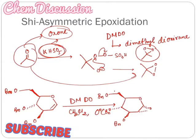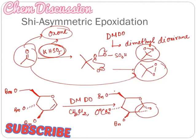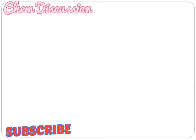So by using a dioxirane compound, we can get an epoxide. Using this chemistry, Shi and his co-workers have developed a beautiful technique to synthesize asymmetric epoxide.